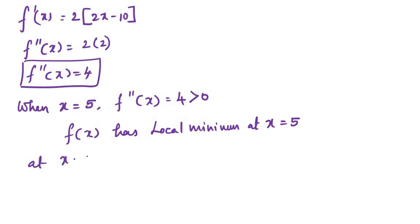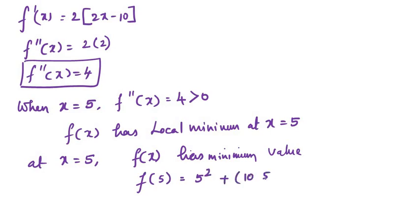At x is equal to 5, f of x is equal to 5 square plus 10 minus 5 whole square. Therefore f of 5 is equal to 25 plus 25.